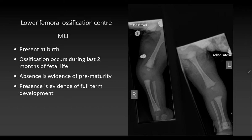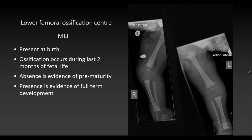There is a medico-legal importance to the ossification center of the femur. The shaft ossification begins in the eighth week of intrauterine life, but the lower end ossification center is unique because it appears at birth itself. Ossification occurs during the last two months of fetal life. The absence of this center is evidence of prematurity, and its presence is evidence of full-term development — of utmost importance in medico-legal cases differentiating between a stillborn and a liveborn child.